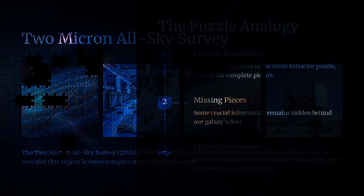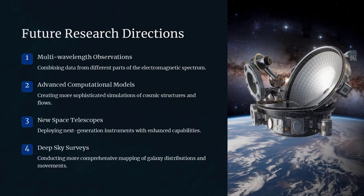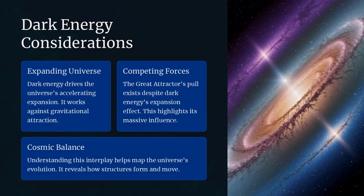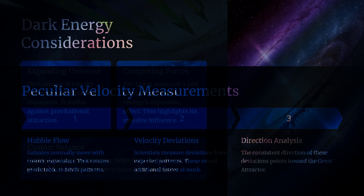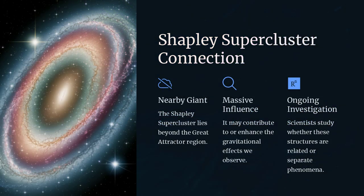Another challenge in studying the Great Attractor is its location. It lies in the direction of the so-called Zone of Avoidance, an area obscured by the dust and stars of our own galaxy, making it difficult to observe with optical telescopes. This has forced scientists to rely on radio and infrared observations which can penetrate the dust.